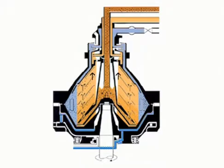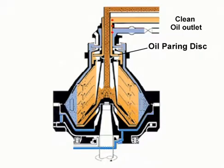When the cleaned oil leaves the disk stack, it rises upwards and flows over the level ring and enters the oil-pairing chamber. The oil is pumped by the oil-pairing disk and leaves the bowl through the outlet.